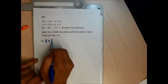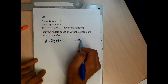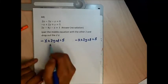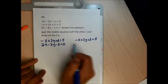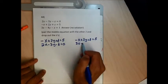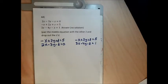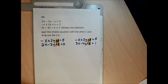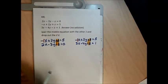Problem 44 is a no-solution problem. No solutions are wonderful because the algebra is way less work. I can tell because the letters will drop out and I'll have a false statement. I'll pair the middle equation — negative x plus 2y plus z equals 5 — with the top equation: 2x minus 3y minus z equals 0, and with the bottom equation: 3x minus 4y minus z equals 1.